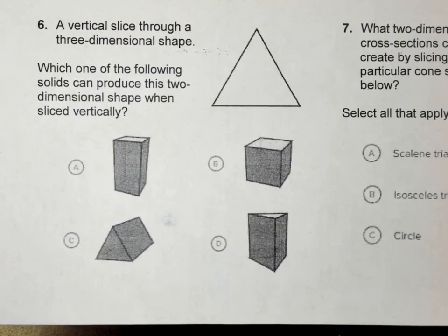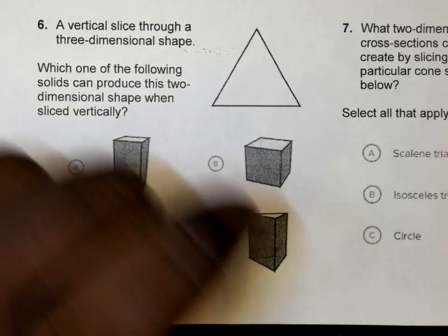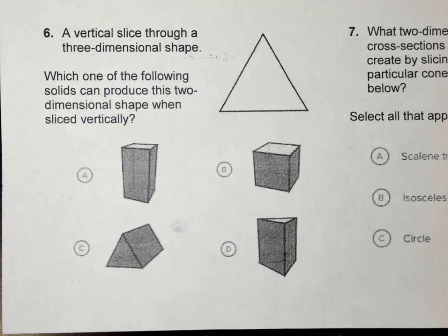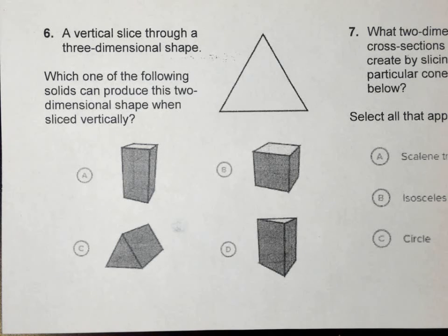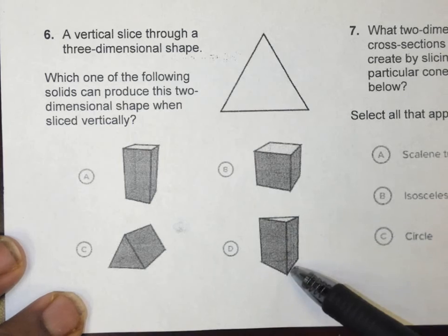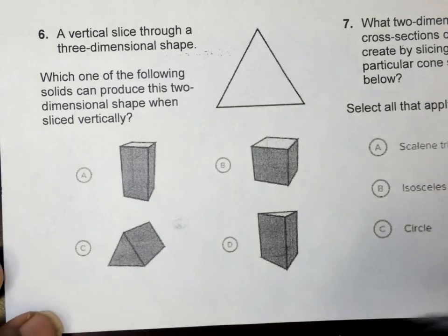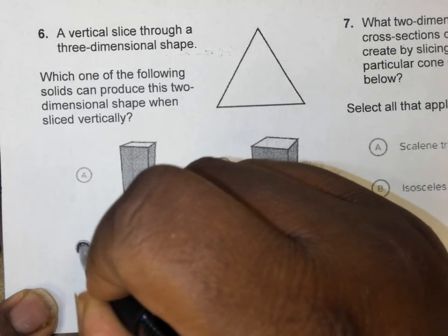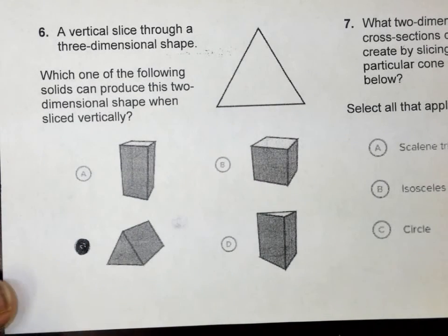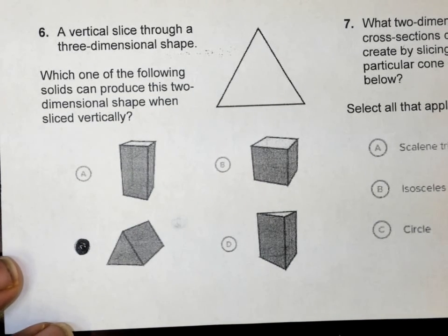Number six. A vertical slice through a three-dimensional shape - which of the following solids can produce this two-dimensional shape when sliced vertically? Such a 2D shape up here. Which one of these solids can produce that when sliced vertically? Kaley. Which one again? It's D. Now if I slice D vertically, I'm going to see a rectangle, just to be honest with you.